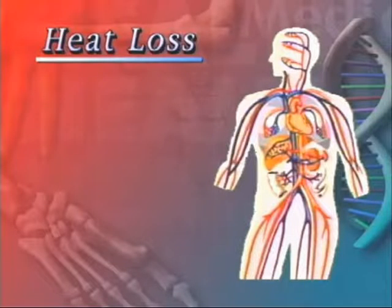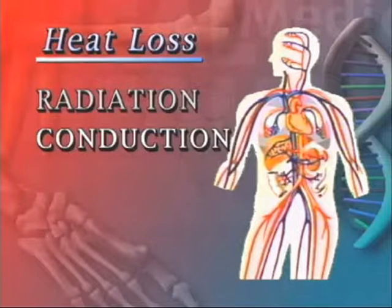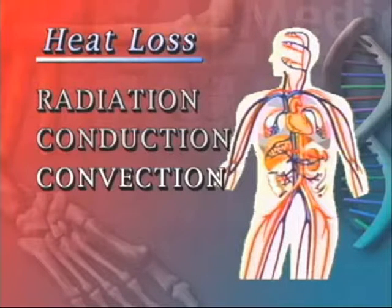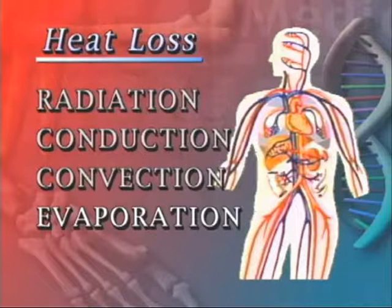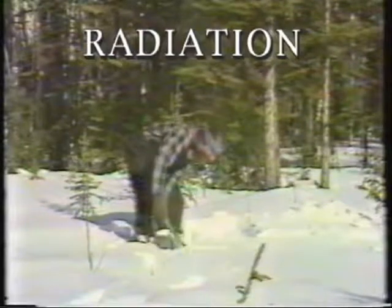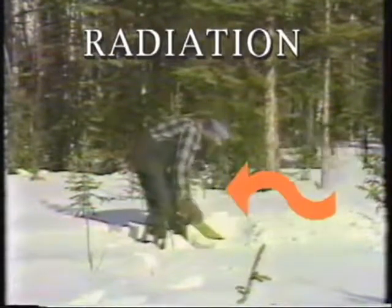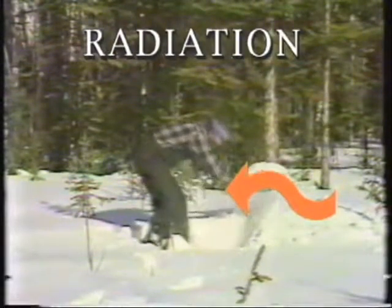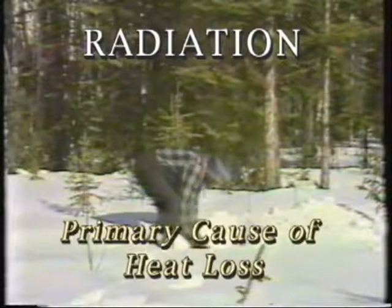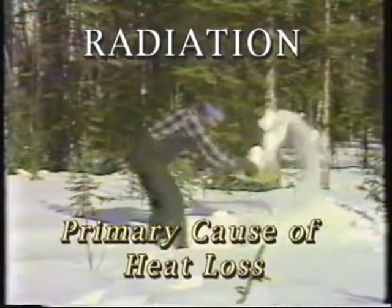Heat is lost from the body through four different mechanisms: radiation, conduction, convection, and evaporation. Radiation is the transfer of heat waves from the body to the environment or from the environment back to the body. Radiation is considered the primary cause of heat loss.